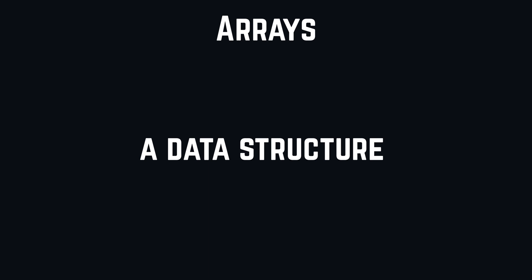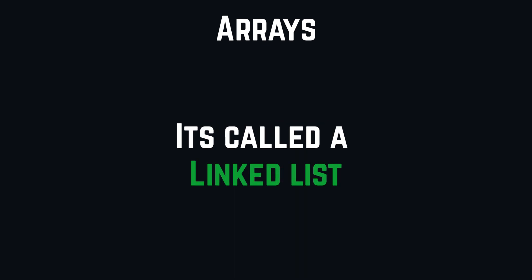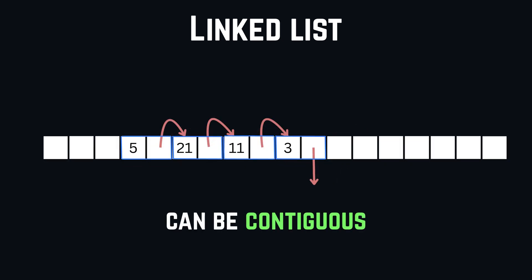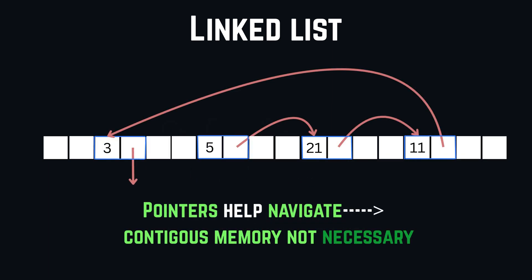The data structure that does the resizing better is called a linked list. A linked list in its simplest form consists of nodes where each node stores data and a pointer that can point to the next data block. Unlike an array, a linked list does not require a contiguous memory location. Instead, the linked list nodes can be scattered throughout the memory because each node contains a pointer that references the next node of the list.